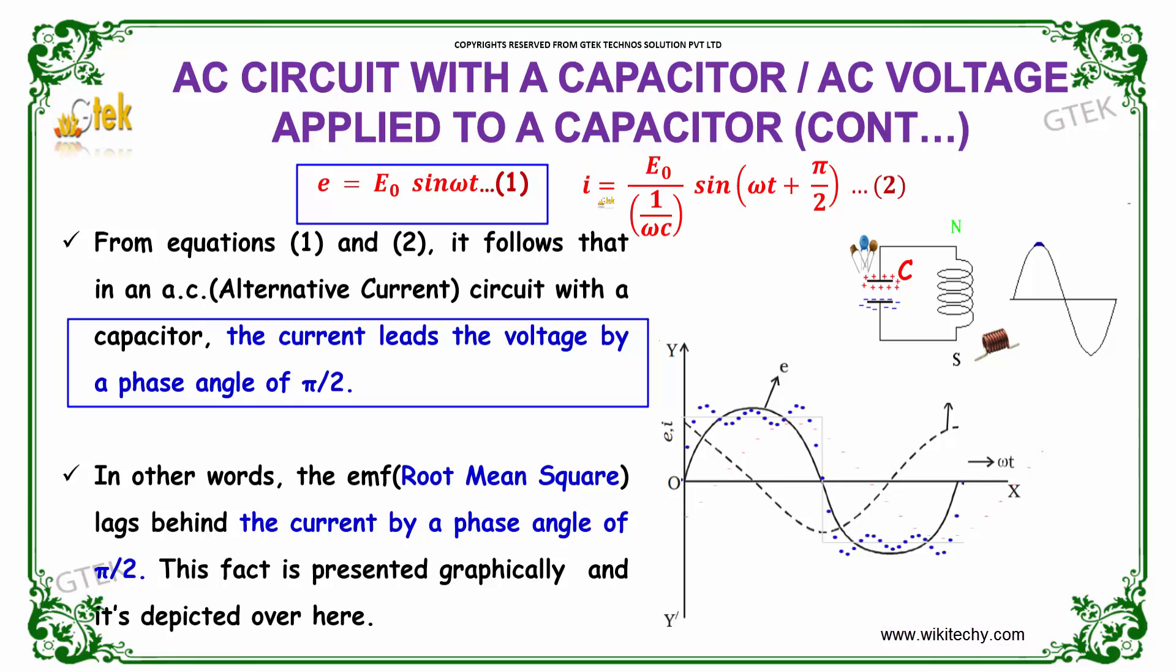The current leads the voltage by π/2, phase angle by π/2. You are able to see the current is leading the voltage by π/2. In other words, the root mean square lags behind the current by a phase angle of π/2.